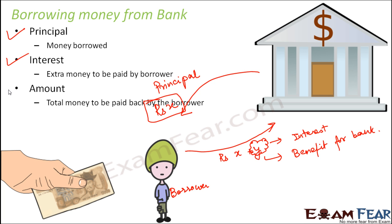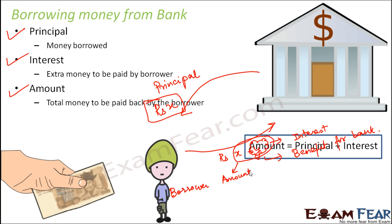The third term is amount — the total money to be paid back by the borrower. So total money means X plus Y, and this X plus Y together is called the amount. Principal is the money the bank gives you, interest is the extra money you return, and amount is the total money you return. From this, we can say that amount is always equal to principal plus interest.